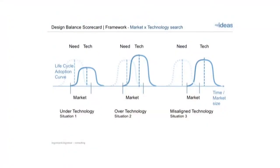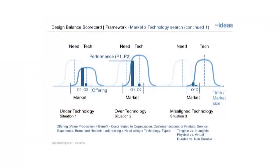This shows how we look at the fit between technology and market. You're looking at three different situations: either you are under-technology, over-technology, or misaligned technology. These are the situations we see for an existing market in how those two needs and solutions will overlap or match or not match, giving you certain opportunities for products. You can never sell products that don't fill a need.